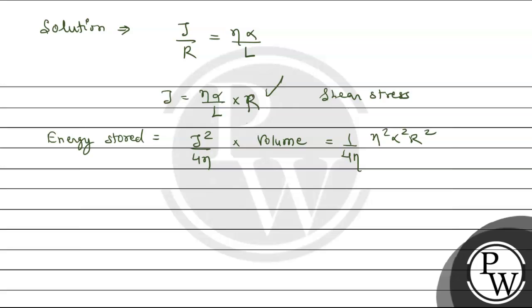Times volume. Volume for cylindrical structure is pi R square into length L.